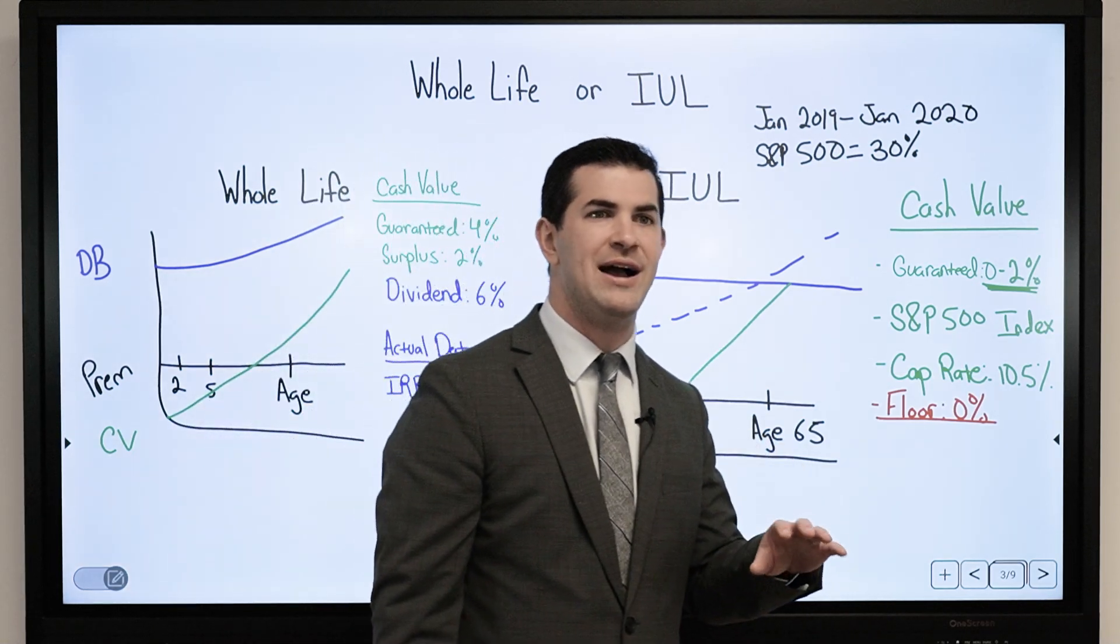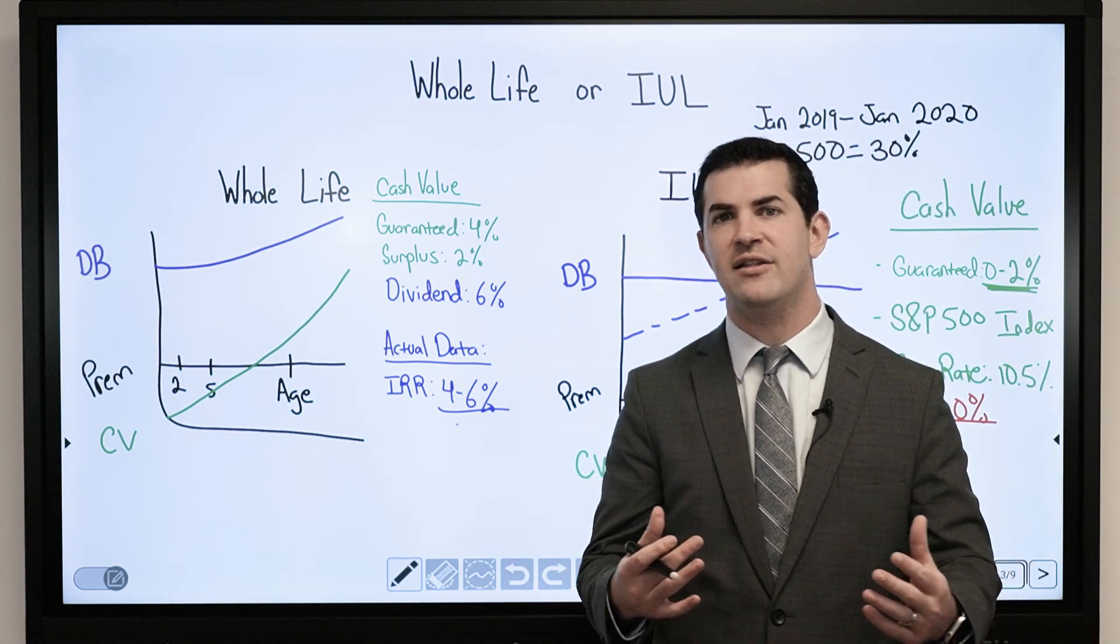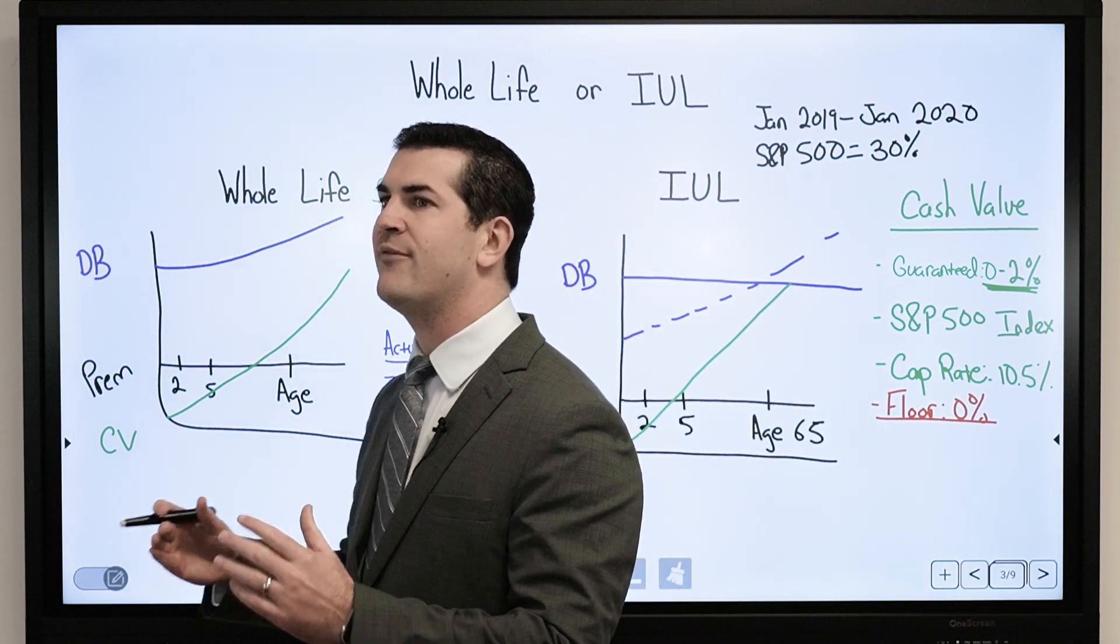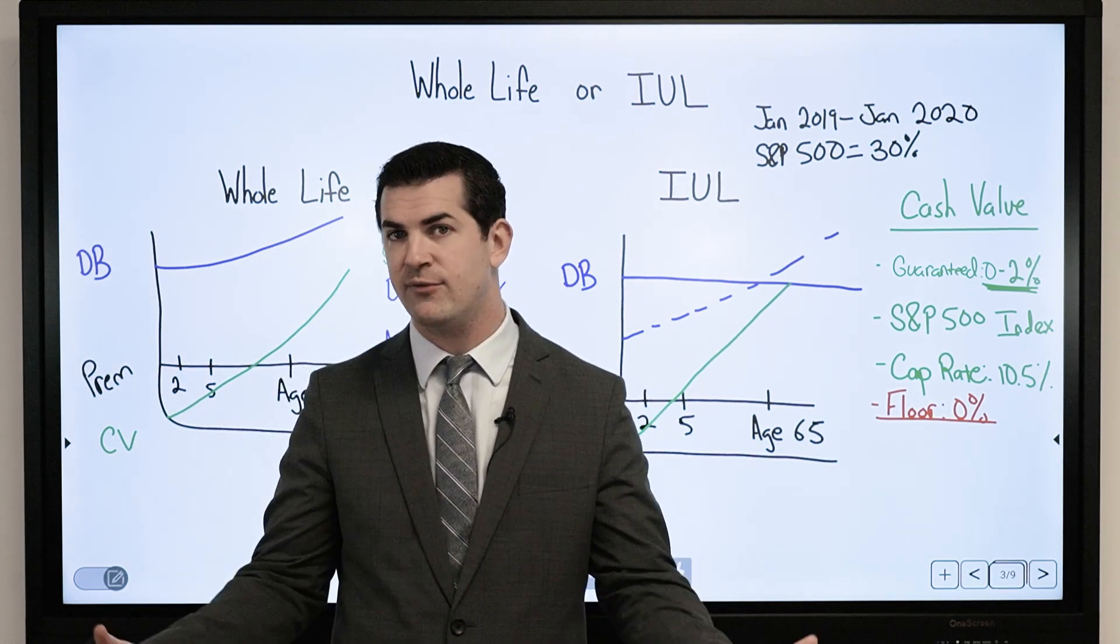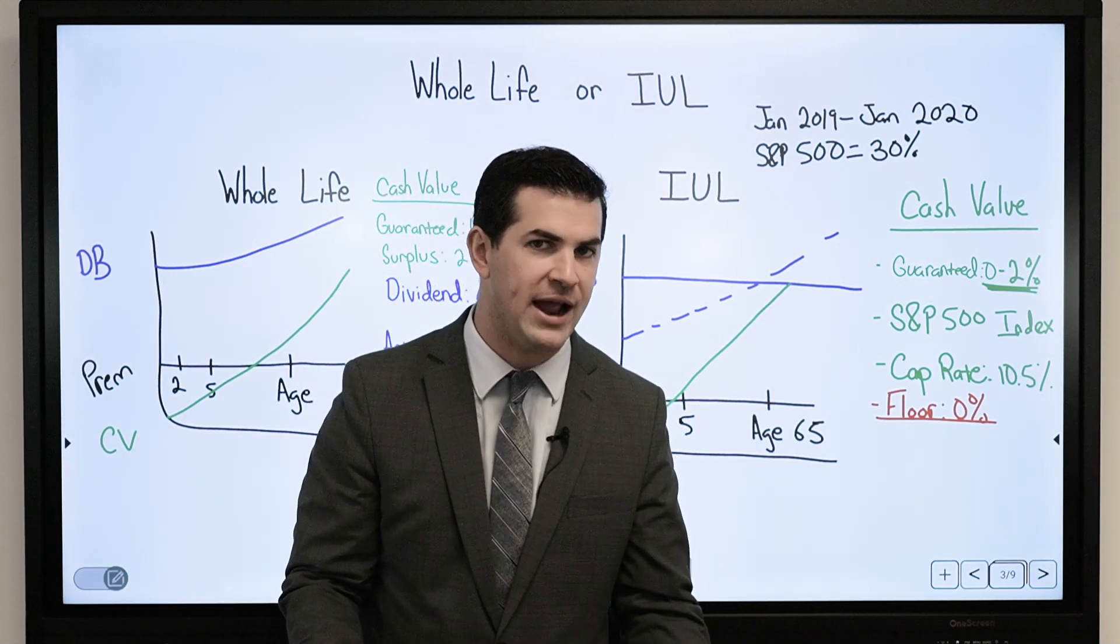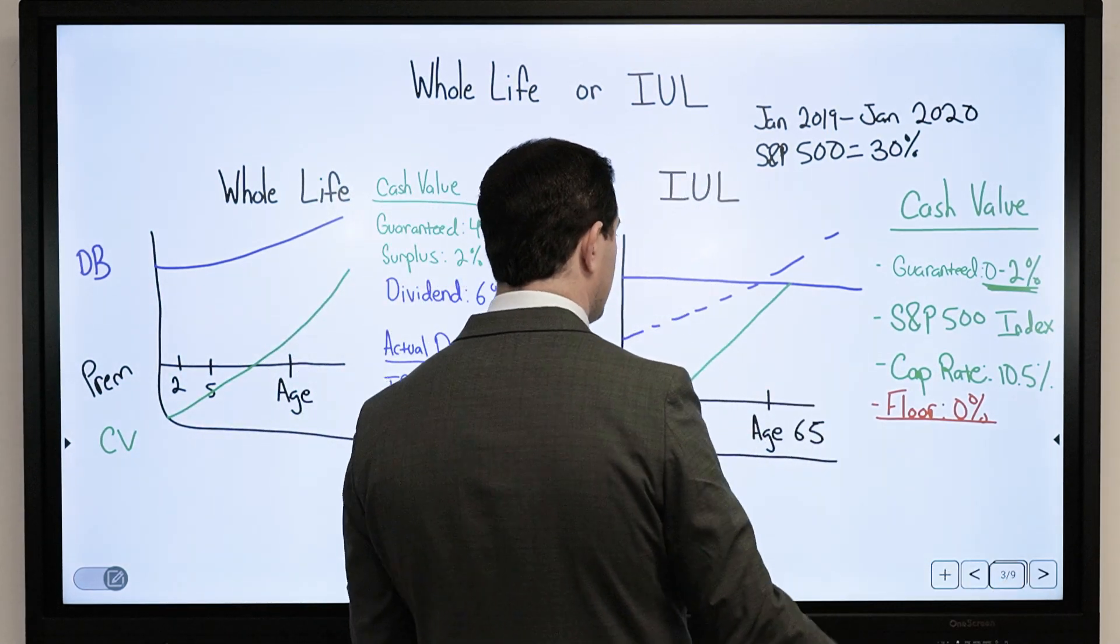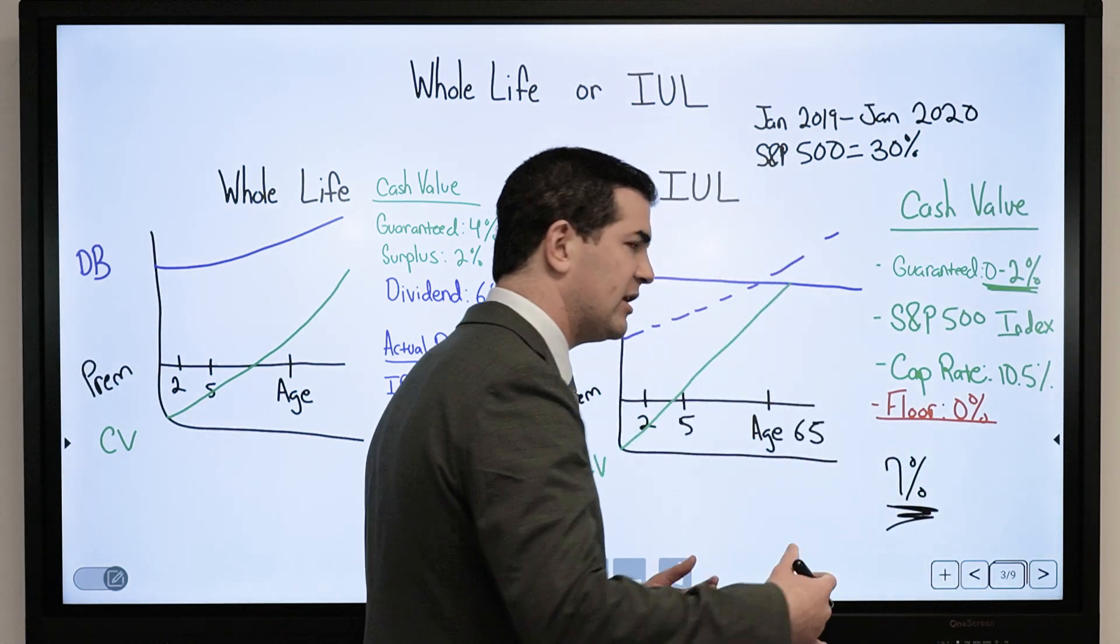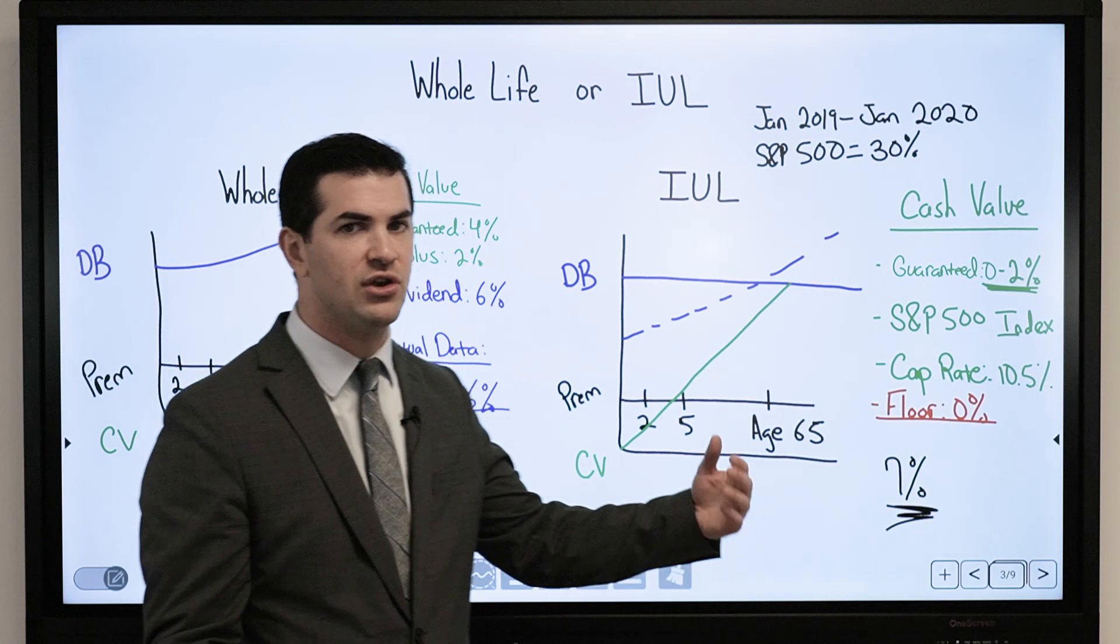You will often see with IUL products, when we look at a hypothetical illustration, it will backtrack and take the last 25 or 30 years of market performance and assume if the market averages out 6%, 7%, 8% over the past 30 years, here's what it produces. If the S&P 500 over a period of time produced 7%, an IUL would produce 7% factoring in the insurance expenses. That's where the projections or hypotheticals assume that.